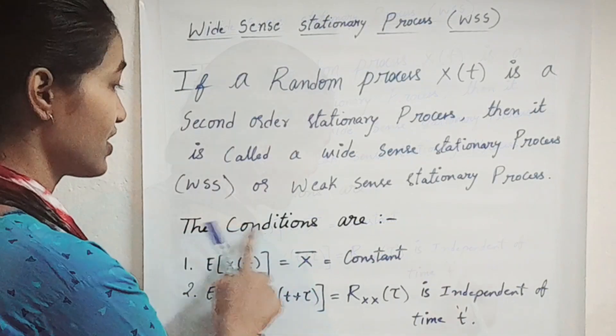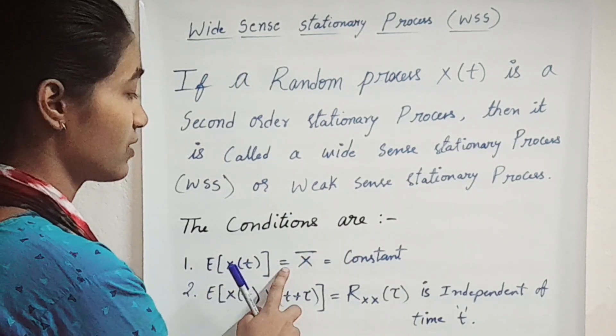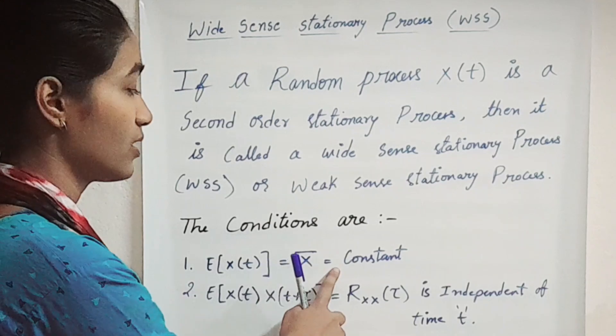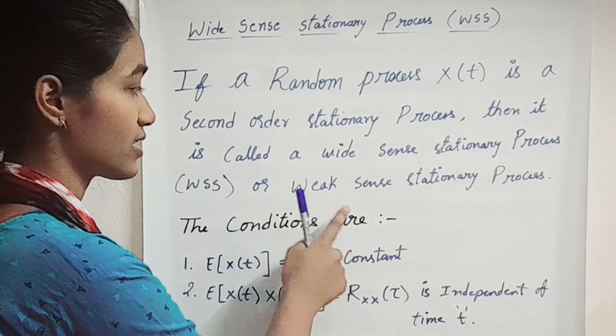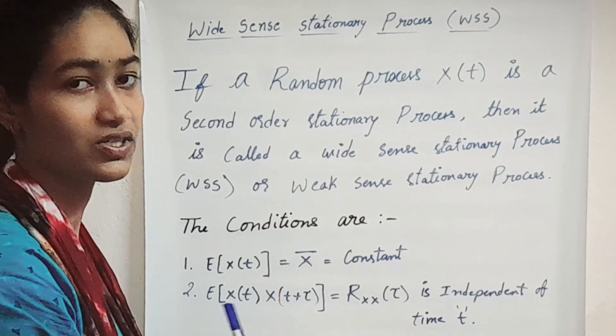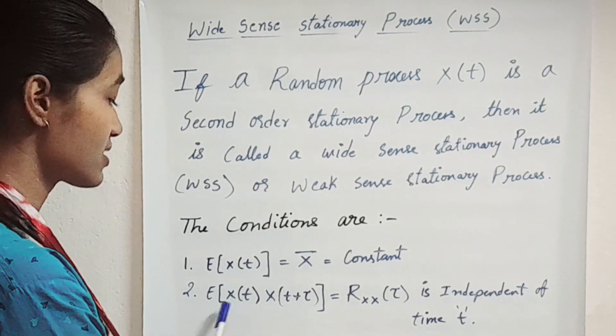The conditions are: the first one is E[X(t)] = x̄ = constant. This is the first condition which it has to satisfy for Wide Sense Stationary Process. And the next second condition is E[X(t) × X(t+τ)] = Rxx(τ) and is independent of time t.